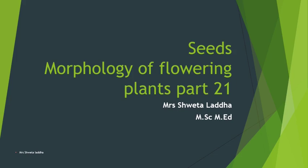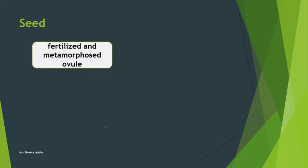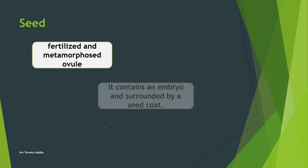Hello students, welcome to part 21 of morphology of flowering plants. Today we are going to discuss about seeds. A seed can be defined as a fertilized and metamorphosed ovule. After fertilization, the ovule metamorphoses - that is, it changes shape and structure - and forms a seed.